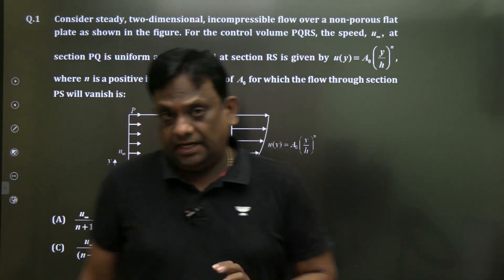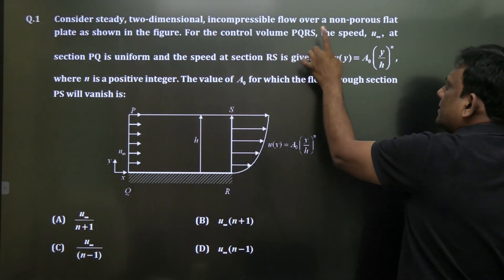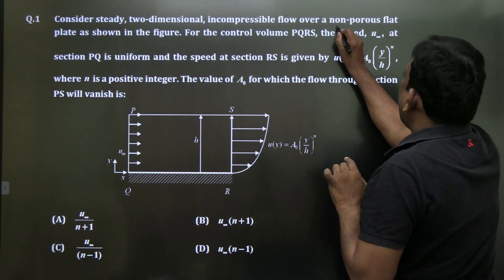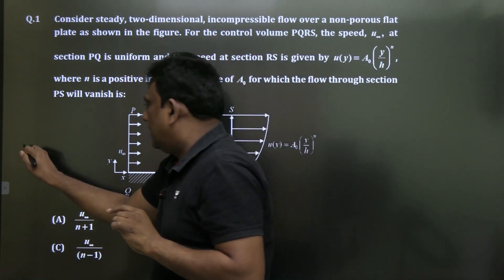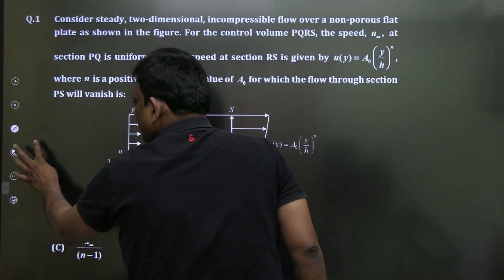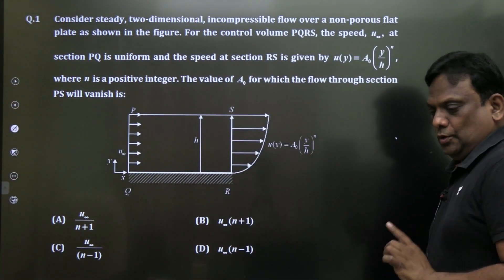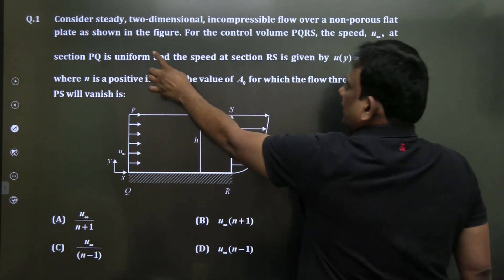Welcome, this is the second lecture on GATE questions for 2023 on fluid mechanics. Let's start with the first question. Consider steady two-dimensional incompressible flow over a non-porous flat plate. Please focus on this word: non-porous.